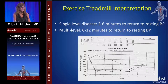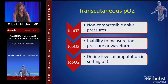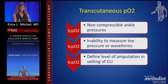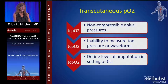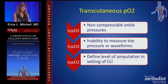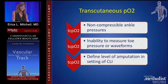Transcutaneous oxygen measurements define wound healing capability at the level of the toe, TMA, ankle, and in some cases below-knee or above-knee. This helps guide the level of amputation — for example, if the toe pressure is zero, a toe amputation won't heal; if the transmetatarsal pressure is 10 and the ankle pressure is 20, those levels also won't heal. This guides you to perform a BK or AK amputation instead.